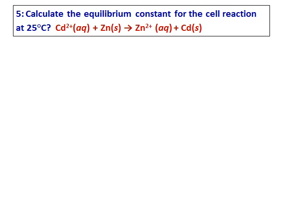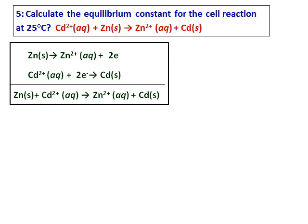Calculate the equilibrium constant for the cell reaction at 25 degrees Celsius. Cadmium ion reacts with zinc to give you zinc ion plus cadmium. The first step you have to do is to identify the anode and the cathode. And when you separate them into the half reactions, you realize zinc becomes zinc ions and cadmium ion is becoming cadmium. Therefore, zinc is getting oxidized and cadmium is getting reduced.